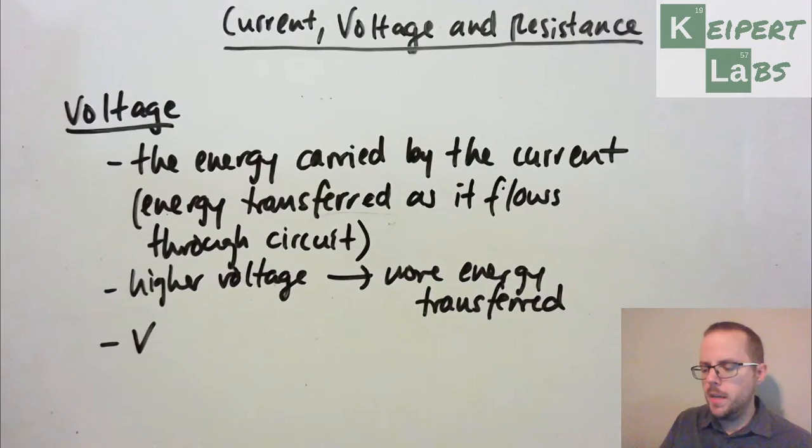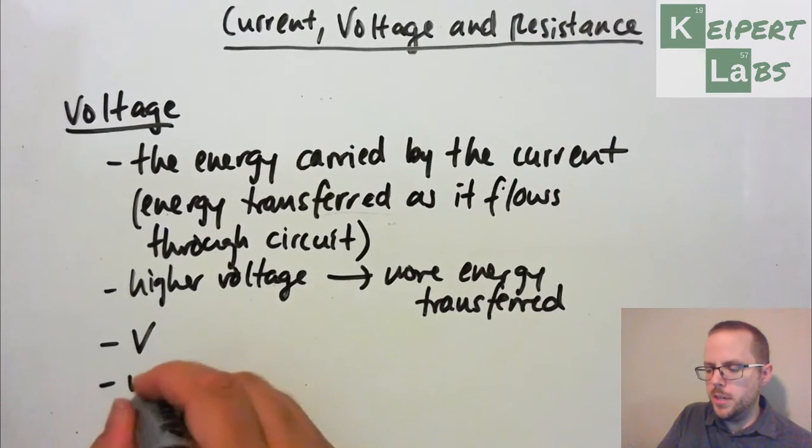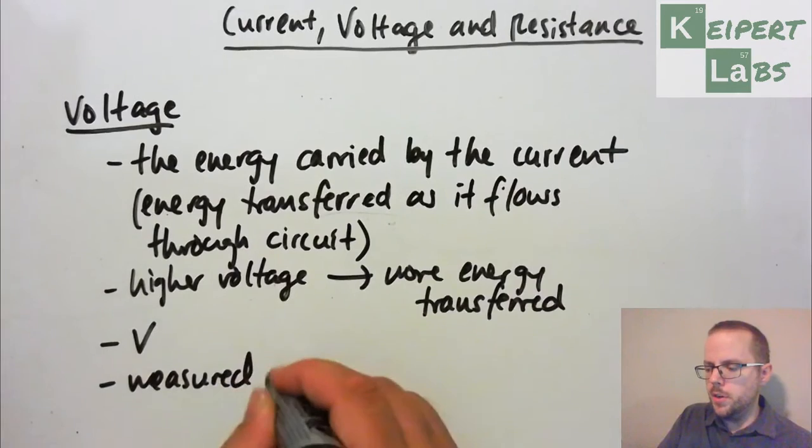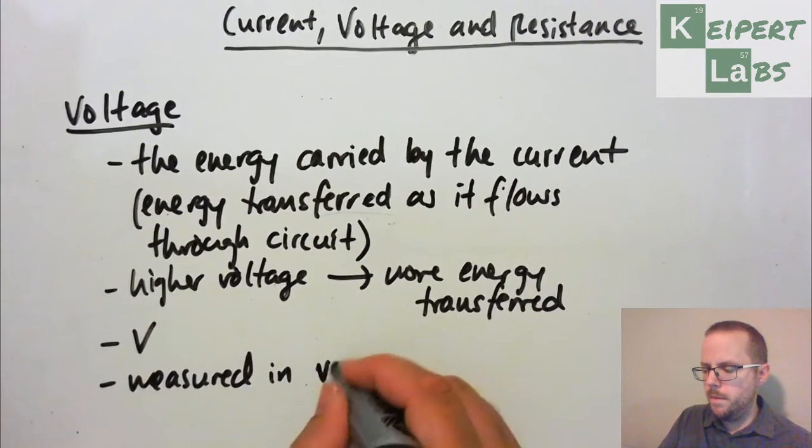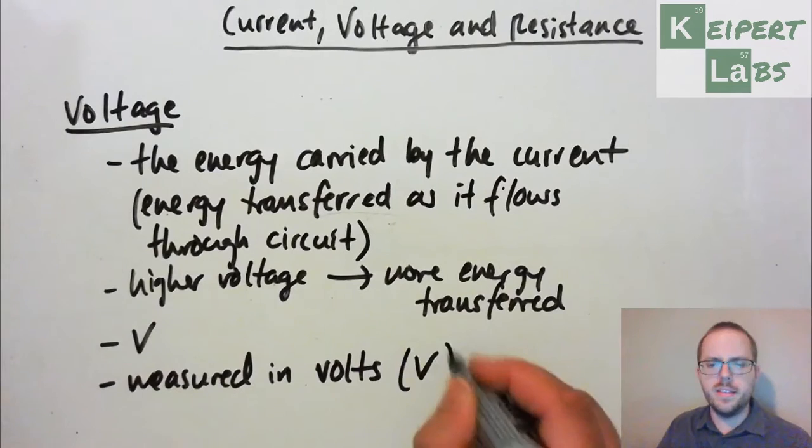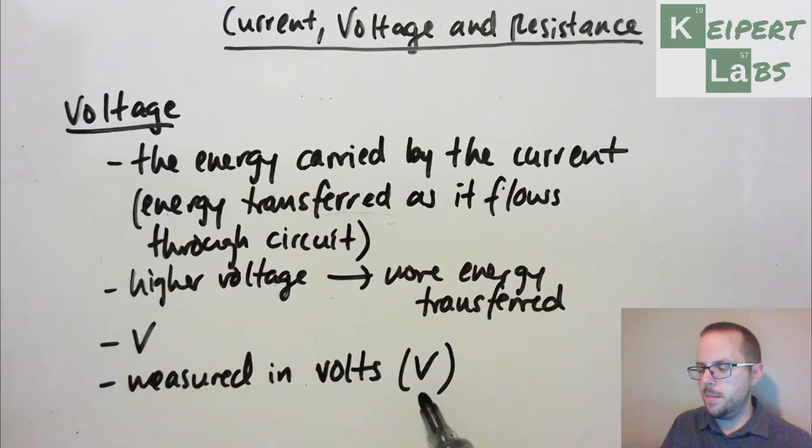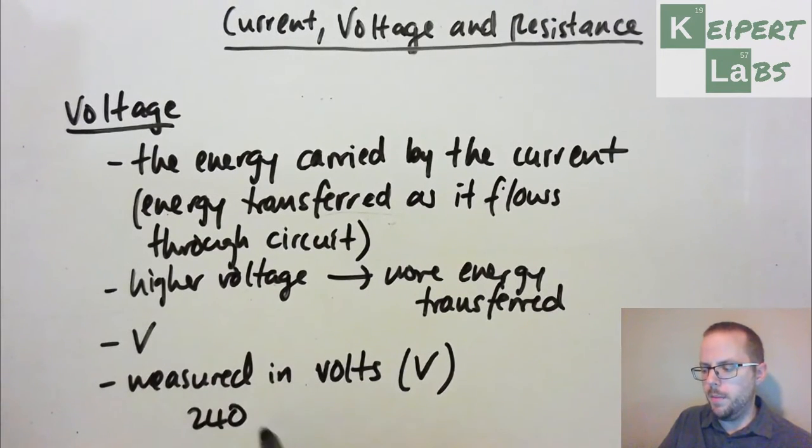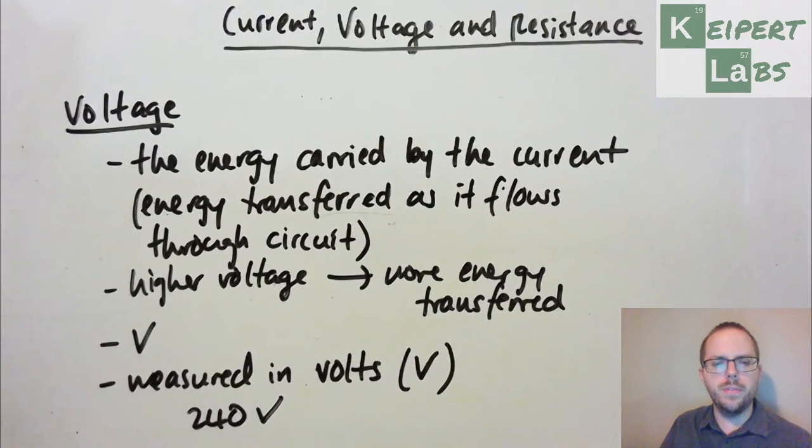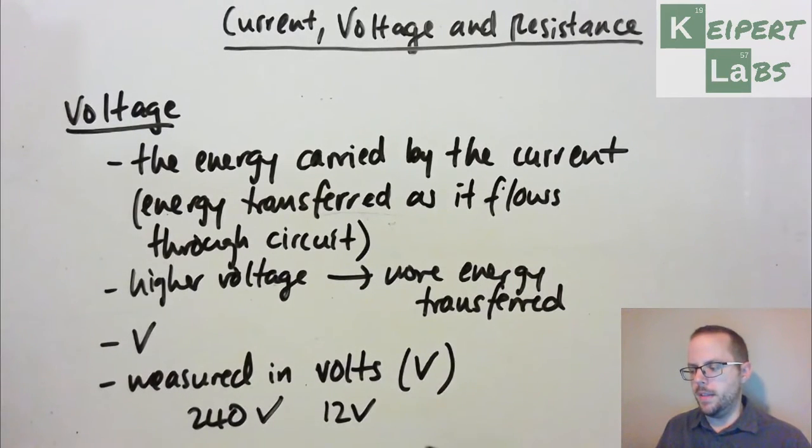So it's given the symbol of V. And it's measured in units called volts, which has the symbol of a capital V. So its symbol as a property and its symbol of its units are the same. So when you plug something into a wall socket, it has an energy of 240 volts, which is much higher than the maximum that we would use here in the lab, which is 12 volts. So the idea being that something plugged into one of our power packs gets much less energy than it would if it was plugged directly into the wall.